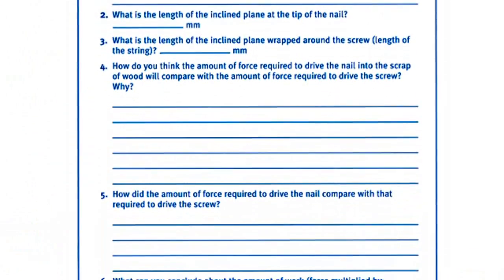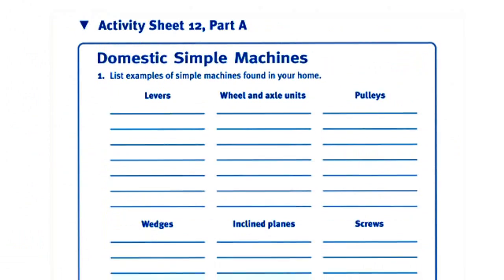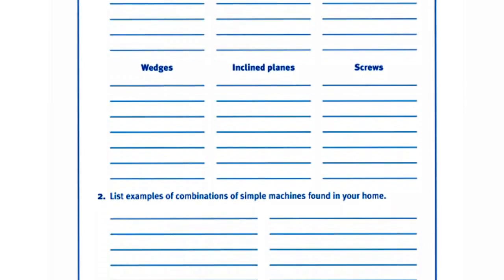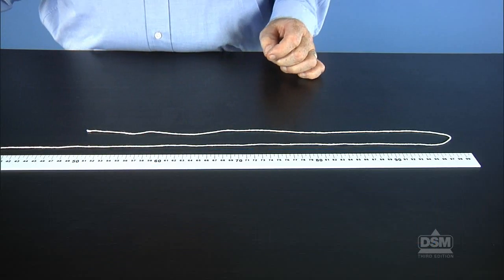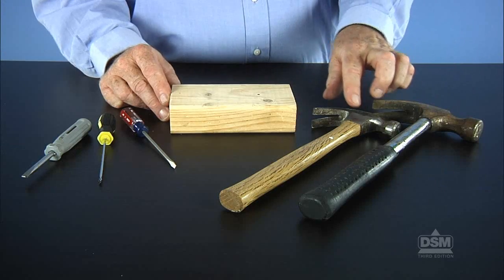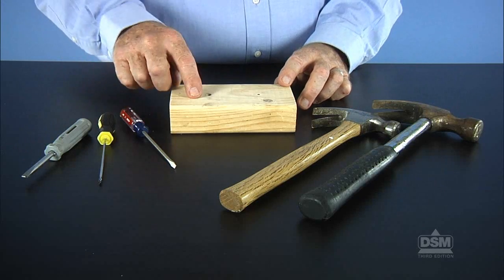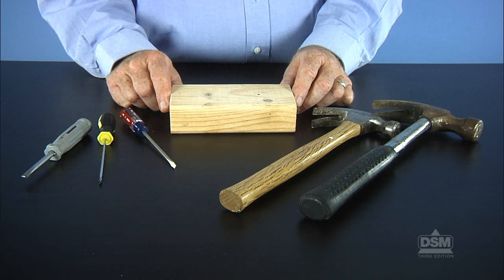To prepare for the activity, make a copy of activity sheet 11 and activity sheet 12 part A for each student. Then cut a piece of string 45 centimeters long for each team. Parents may be able to contribute slot head screwdrivers and hammers for this activity, and scrap pieces of wood can often be obtained from a construction site or lumber yard.